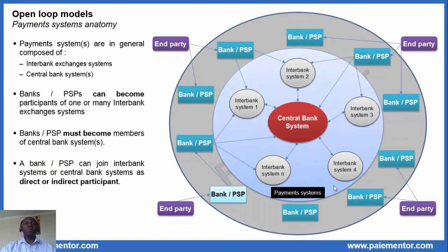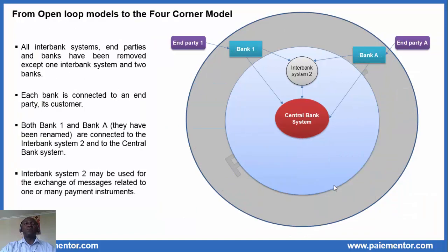In the first video about open-loop models we saw a slide on the anatomy of payment systems. It shows what the main parts of payment systems are and how the whole system is made up. I encourage you to watch the video about open-loop models if you haven't done it yet. Now look at this picture carefully and let's do a simple exercise. Let's remove all the interbank systems except one, and let's also remove all banks except two, keeping the end party connected to each bank. What will the end result look like?